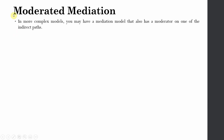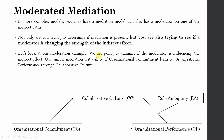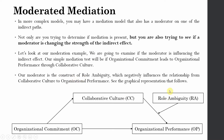In moderated mediation, you may have a mediation model that also has a moderator on one of the indirect paths. Not only are you trying to determine if mediation is present, but you are also trying to see if the moderator is changing the strength of the indirect effect. We will examine if the moderator is influencing the indirect path from OC to OP through collaborative culture. Our moderator is role ambiguity, which negatively influences this relationship. We are also going to test whether role ambiguity moderates, strengthens, or weakens the indirect effect from OC to OP through collaborative culture.